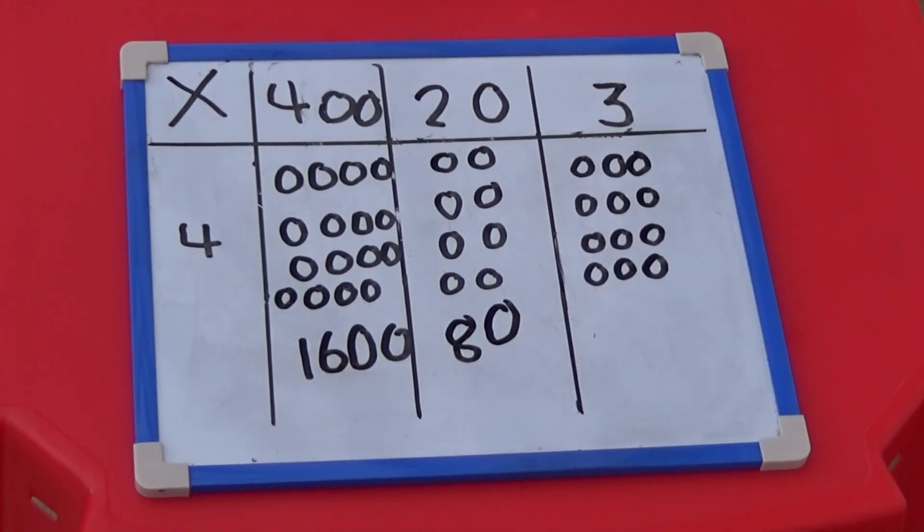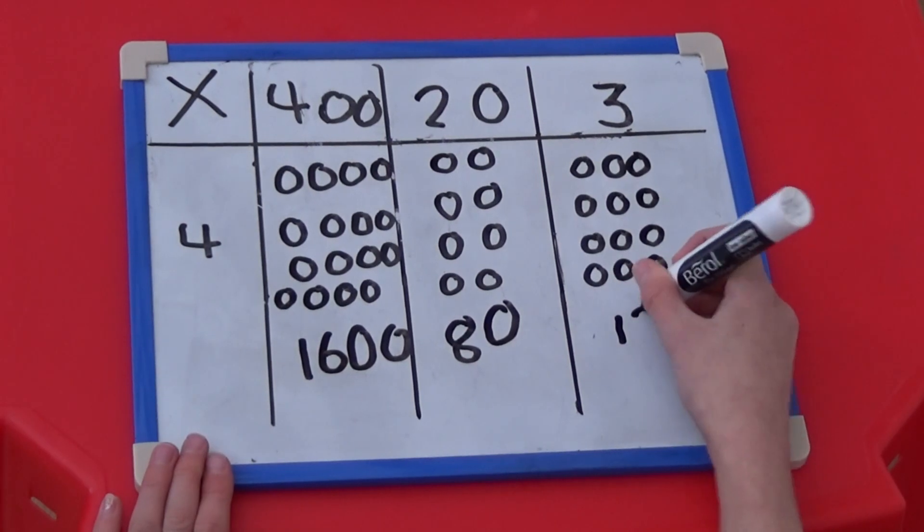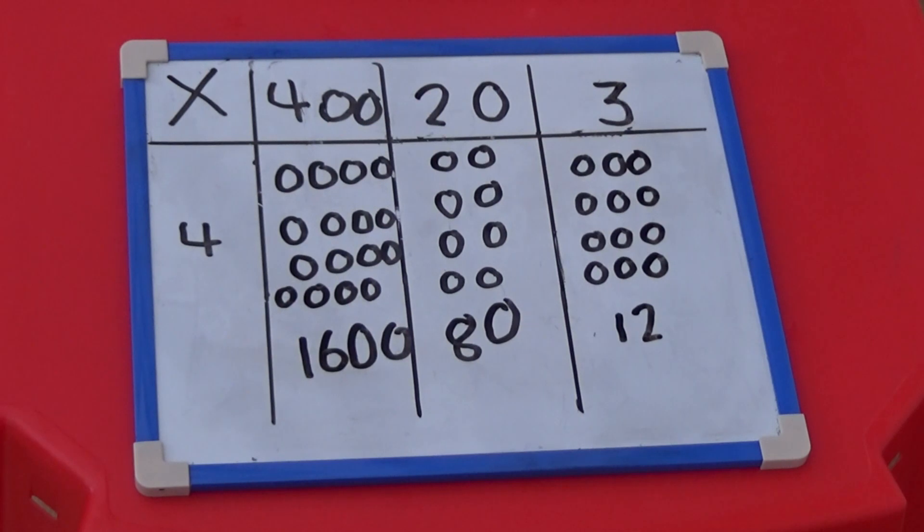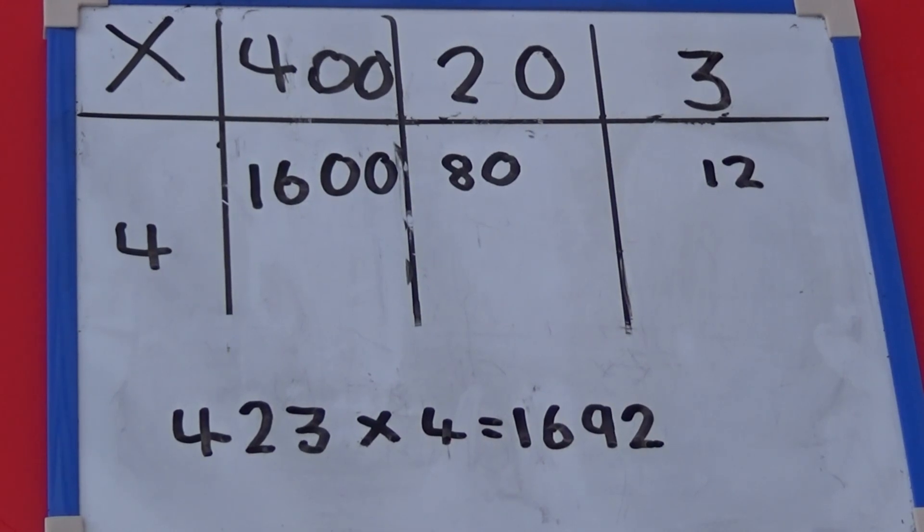20 multiplied by 4 is 80, and 3 multiplied by 4 is 12. So 423 multiplied by 4 is 1,692. We can also show this without the place value counters.